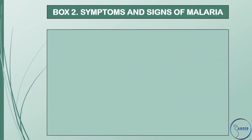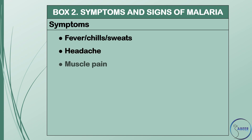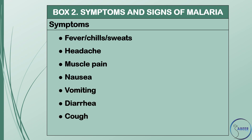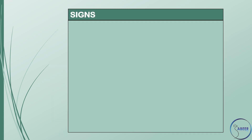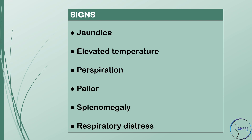Box 2 — Symptoms and signs of malaria. Symptoms: fever, chills and sweats, headache, muscle pain, nausea, vomiting, diarrhea, cough, and general malaise. Signs: jaundice, elevated temperature, perspiration, pallor, splenomegaly, and respiratory distress.